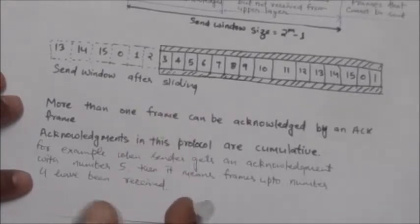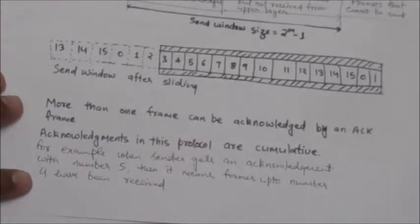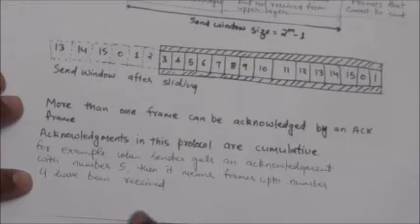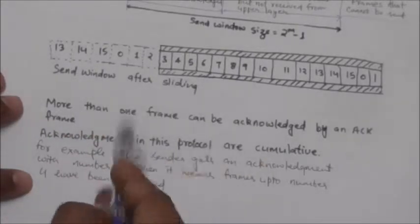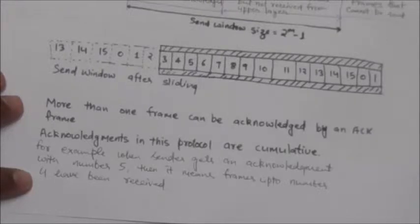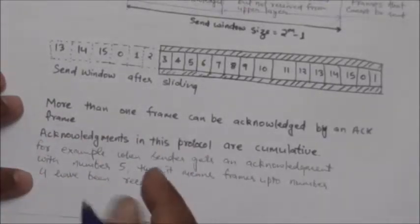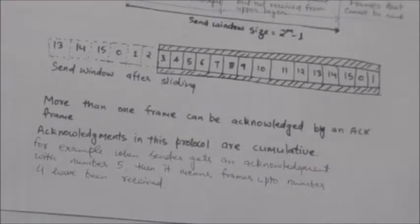The reason the send window can slide one or more slots is that acknowledgements in this protocol are cumulative. This means that more than one frame can be acknowledged by a single acknowledgement frame. For example, when the sender gets an acknowledgement frame with acknowledgement number 5, it means that all frames up to sequence number 4 have been received by the receiver. So the send window can slide one or more slots when a valid acknowledgement arrives.